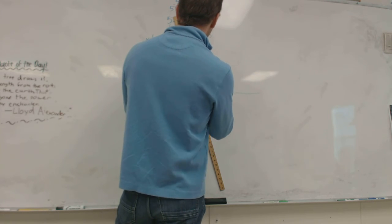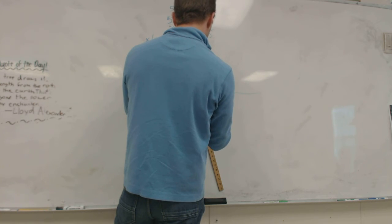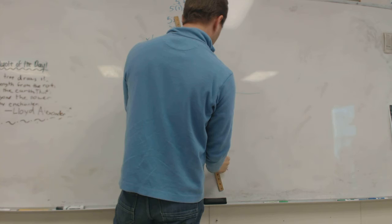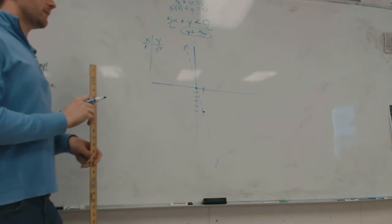Super steep line. Is it going to be dotted or solid? It's going to be dotted because it's not a greater than or equal to. That's right. No equal to. So I make a dotted line.